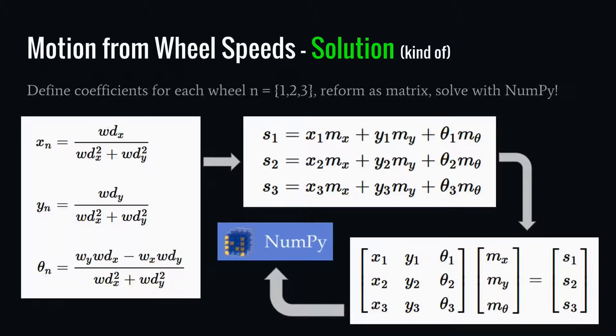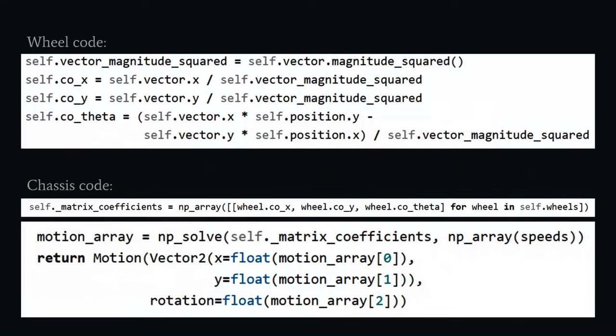The actual code starts to look like this. For each wheel object, there's a setup block that builds a bunch of coefficients using the Python Euclid library — some of these quantities are vectors. The chassis code that does the calculations is the bit at the bottom — it's not very much. You go through quite a lot of derivation to get to this point, but the software itself is quite concise.